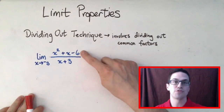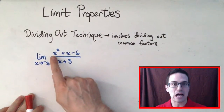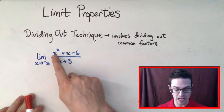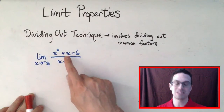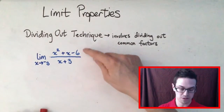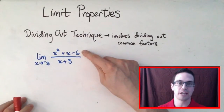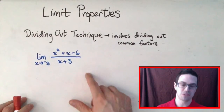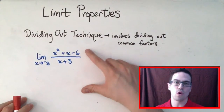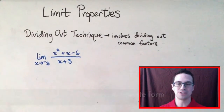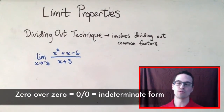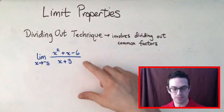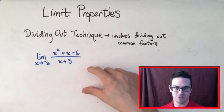If I plug negative three into the numerator, I would get nine plus negative three, which is six minus six, which is zero. So I'd have zero on top. Then if I plug negative three on the bottom, I'd have negative three plus three, which is zero. So I'd end up with zero over zero, which is an indeterminate form. We cannot do direct substitution because we're dividing by zero.